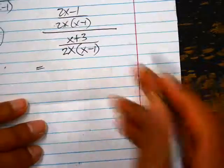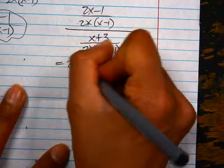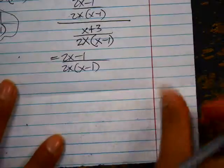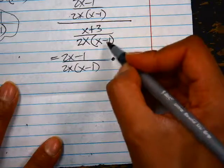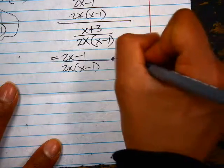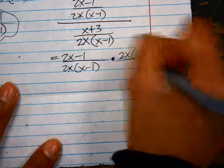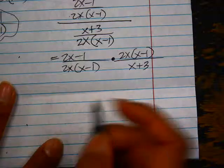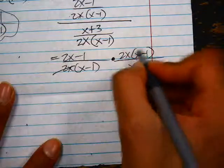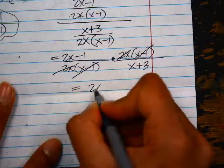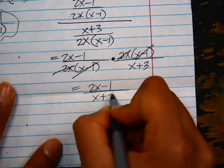If I rewrite this as a multiplication problem, this would be the numerator multiplied by the reciprocal of this, since it's currently divided by. So times, if I flip this fraction, it would be 2x, x minus 1, and then x plus 3. Simplifying this, we can cancel the 2x. We can cancel the x minus 1, and we're left with 2x minus 1 over x plus 3.